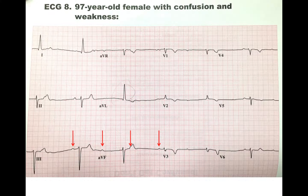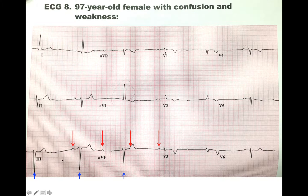But why are the ventricular complexes occurring at different rates? The reason for this is that there is an AV block — specifically, a third degree AV block. You see that the atrial complexes, indicated by the red arrows, are occurring at faster rates than the ventricular rates. Therefore, that means there is no communication from the supraventricular areas to the infraventricular areas.